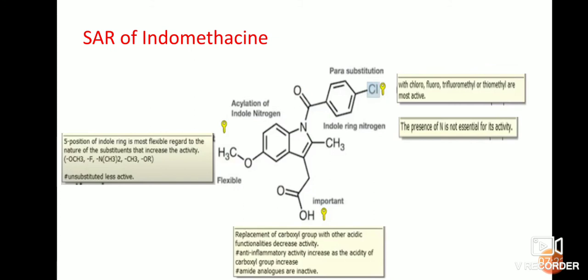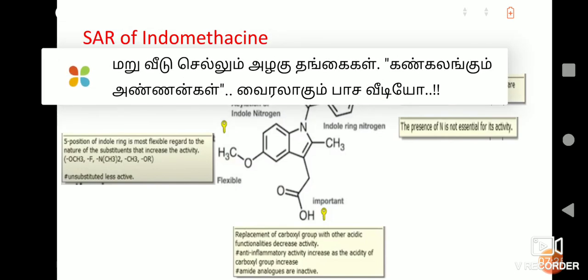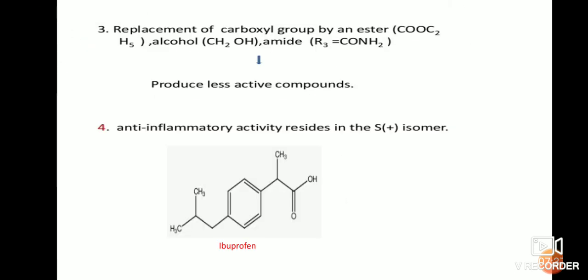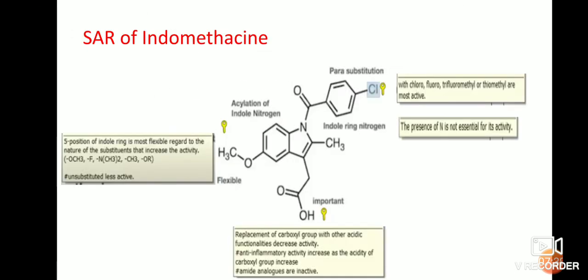Next is the structural activity relationship of indomethacin. I have given the basic structure of indomethacin. There are four important parts. The first point: the fifth position of the indole ring is most flexible with regard to the nature of the substituent — substituents that increase the activity are noted.